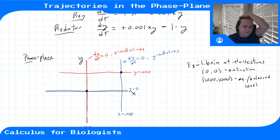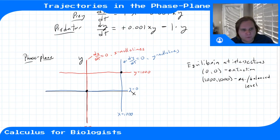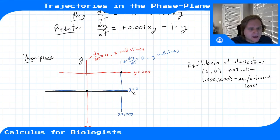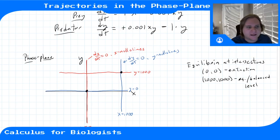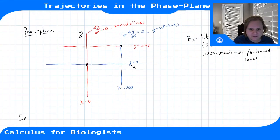We want to think about these equilibria in terms of stability, as we did for discrete-time systems and single autonomous differential equations. However, computing stability here requires finding eigenvalues of the linearized system around the equilibria, which is beyond the scope of this class. Instead, we can plot direction arrows in the phase plane and follow those to find trajectories.